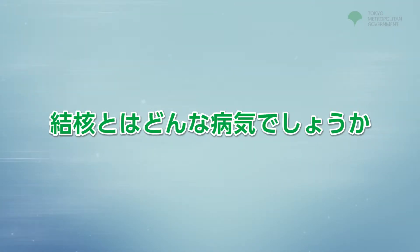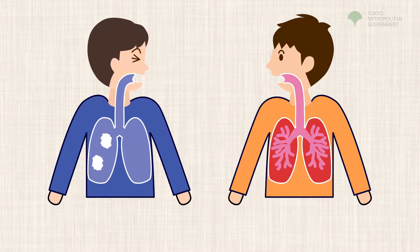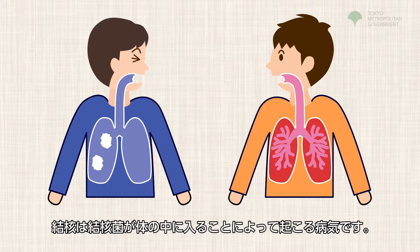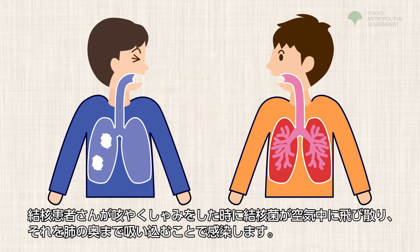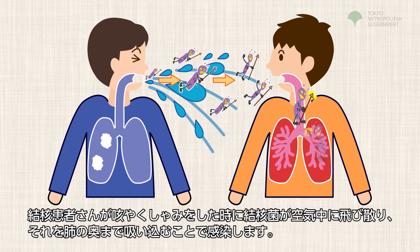What kind of disease is tuberculosis? Tuberculosis is a disease caused when the tuberculosis germ enters the body. Infection happens when a tuberculosis patient coughs or sneezes, dispersing tuberculosis germs into the air, and another person breathes the germs into the back of their lungs.